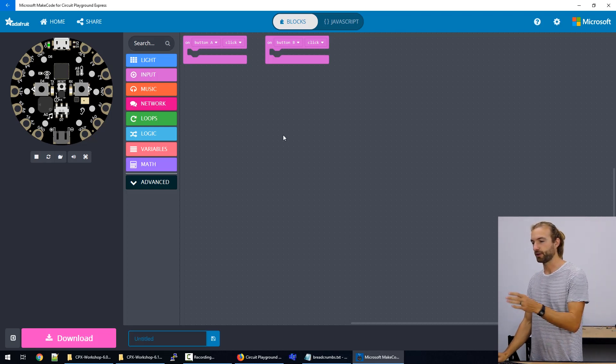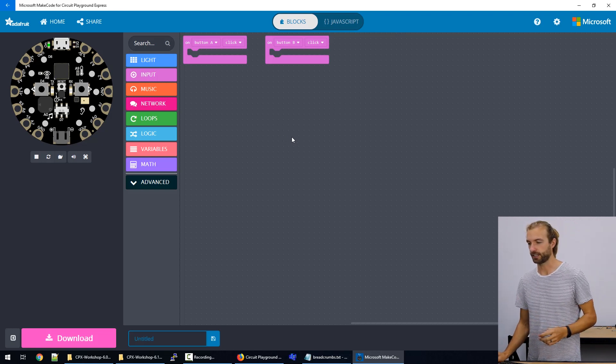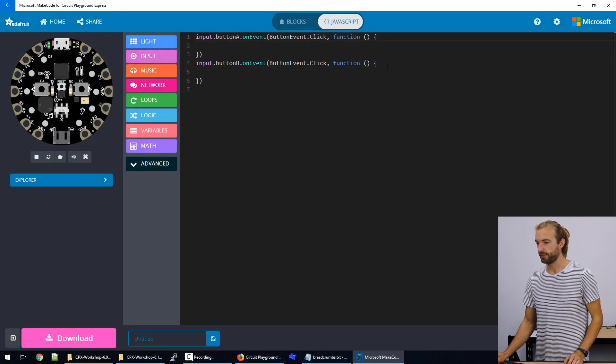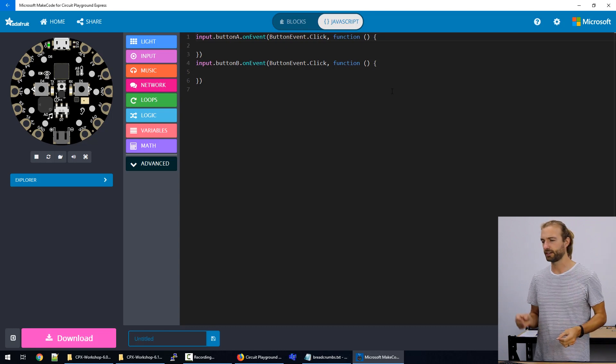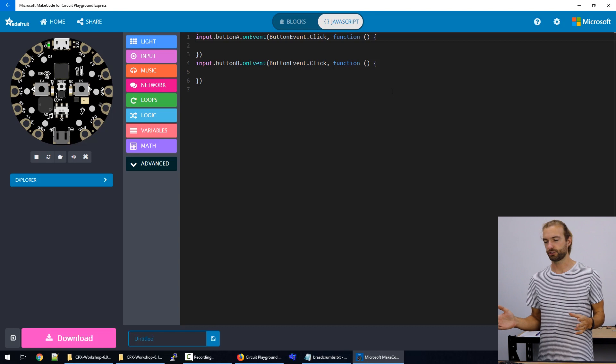So I've got an example up here where I've set up an event for the button A click and a button B click. And if we head over to the JavaScript side, we can see what that looks like within JavaScript. We can program anything we like in JavaScript, we can create our entire sketch in JavaScript here.